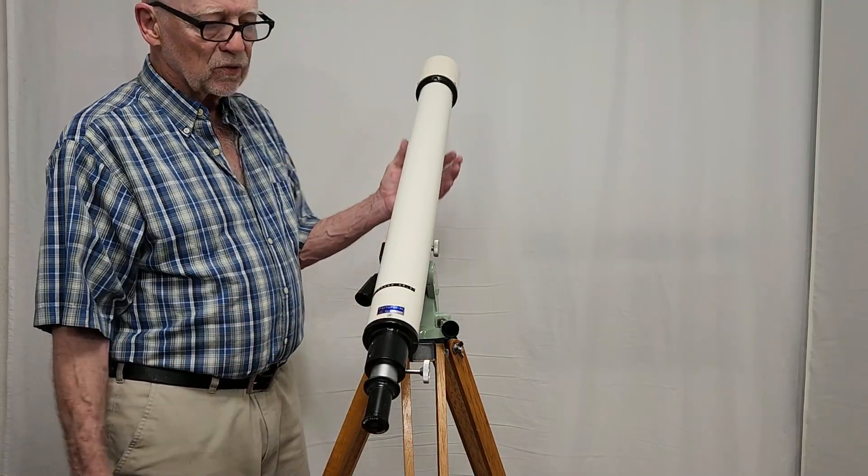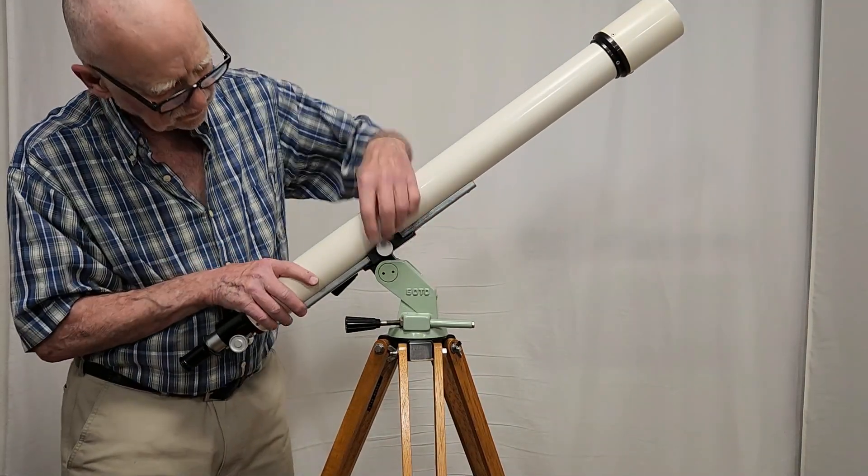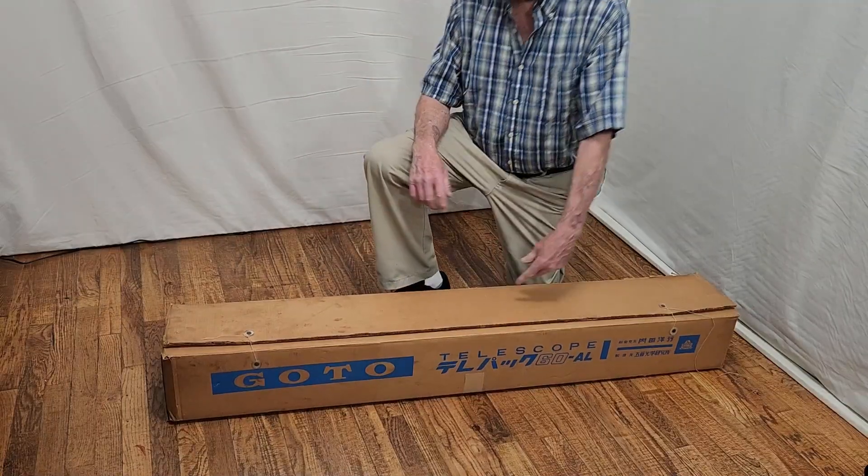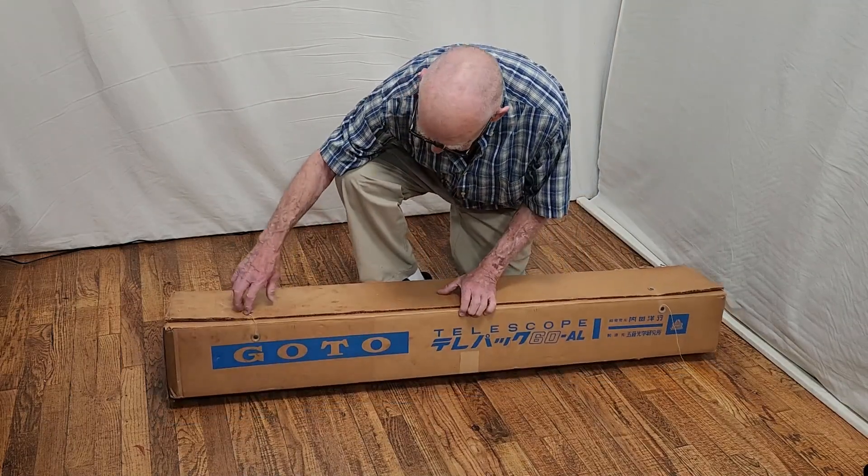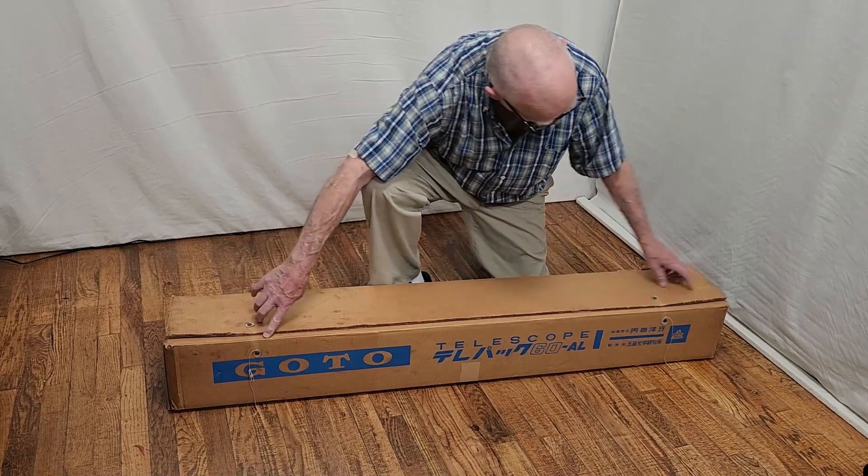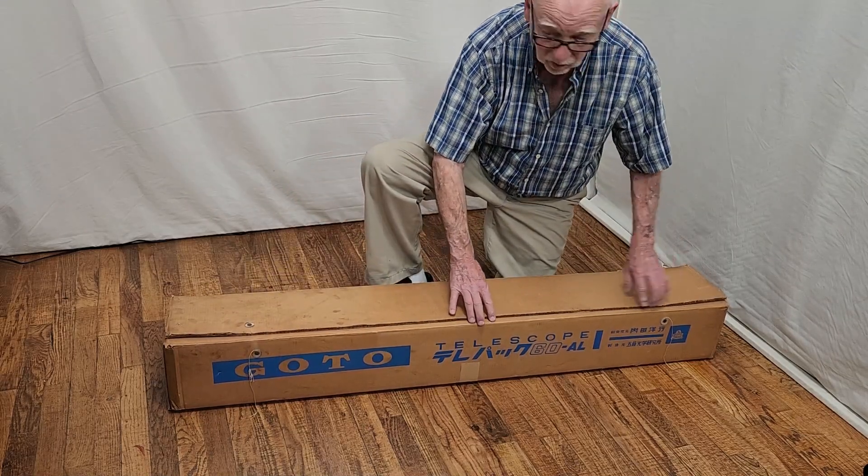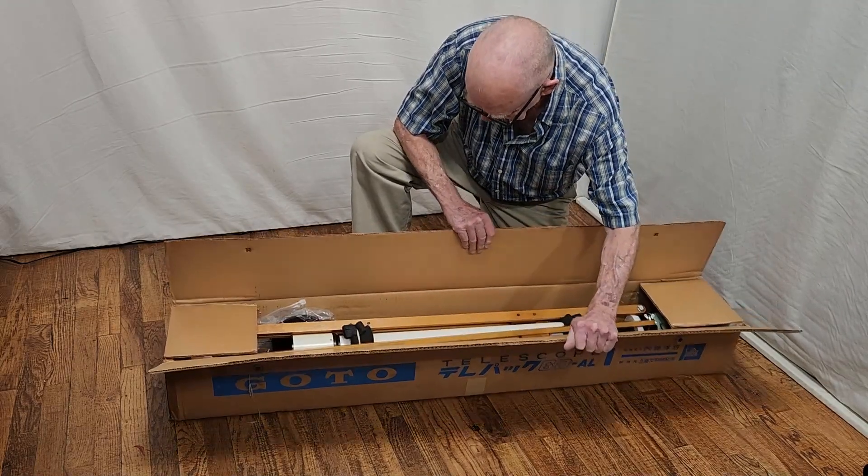Now, one of the most interesting things about this scope is the way it all packs together. Look what the delivery service left today. Let's open this baby up. It's from Gotoh Kogaku. Look at these old fashion, you don't see that anymore. These old string attachments like that. What is inside here? Look at this.